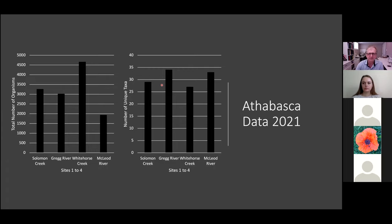The number of unique taxa. Interesting. Your Greg River is your gold medalist first. McLeod River second. Solomon Creek not that far behind either. And then finally, Whitehorse Creek bringing up the rear. So it wins gold medal here, it's off the podium here.